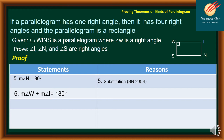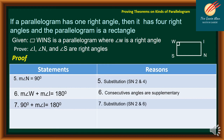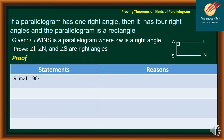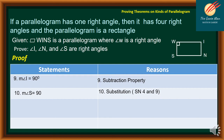Statement 6: measure of angle W plus measure of angle I equals 180 degrees — reason: consecutive angles are supplementary. Statement 7: 90 degrees plus measure of angle I equals 180 degrees — reason: substitution using statements 2 and 6. Statement 8: 90 equals 90 — reason: reflexive property. Statement 9: measure of angle I equals 90 degrees — reason: subtraction property. Statement 10: measure of angle S equals 90 degrees — reason: substitution using statements 4 and 9.